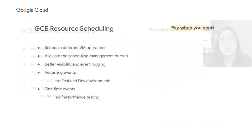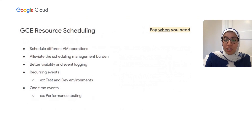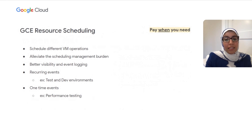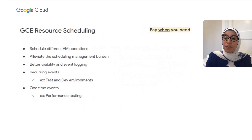Another way to optimize your resource usage is to run resources only when you need them. VM scheduling is available today, which lets you schedule the start and stop of your VMs. Using instance schedules to automate deployment can help you optimize costs and manage VM instances more efficiently. You can use instance schedules for both recurring and one-off workloads — for example, starting VMs in a dev or test environment at 9 a.m. and shutting them down at 5 p.m. every day, or turning them off during the weekend. You can also schedule one-time events like monthly performance tasks or training sessions. With scheduling, we also offer natively integrated logging for visibility and easy troubleshooting.